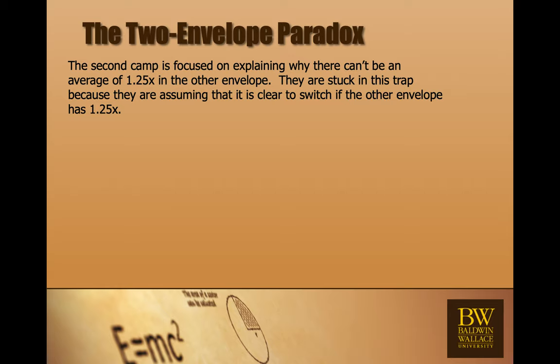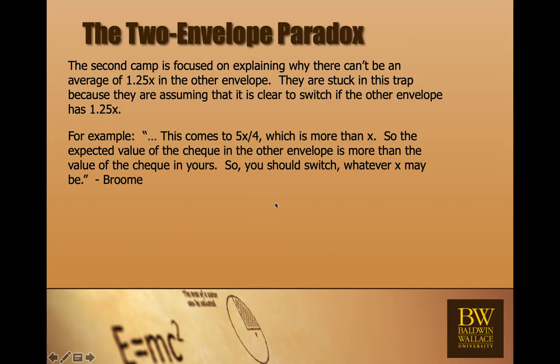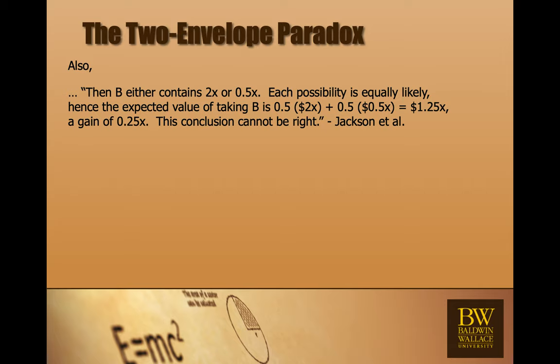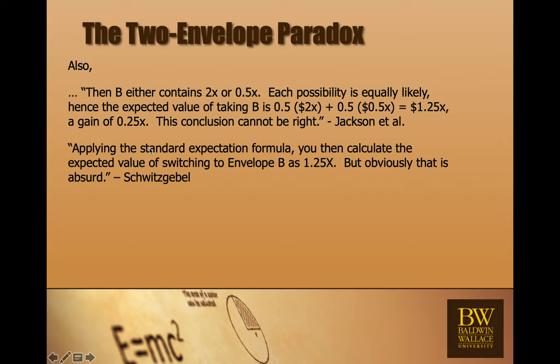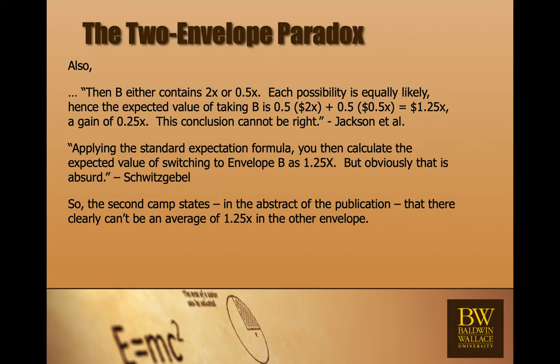There's another camp that says there can't be 1.25x in the other envelope. And then they spend the entire paper trying to explain why. For example, this comes to 5 fourths x, which is more than x. So the expected value of the check in the other envelope is more than the value of the check in yours. So you should switch whatever x may be. B contains either 2x or 1 half x, which is what we saw. Each possibility is equally likely. The expected value is 1.25. This conclusion cannot be right, but it is right. Applying the standard expectation formula, you calculate the expected value of switching to 1.25x. Obviously this is absurd. It is not absurd. This is exactly what it is. It's 1.25x. So there's a camp that's trying to explain why there can't be 1.25x in the other envelope. And they convince themselves that they're right.